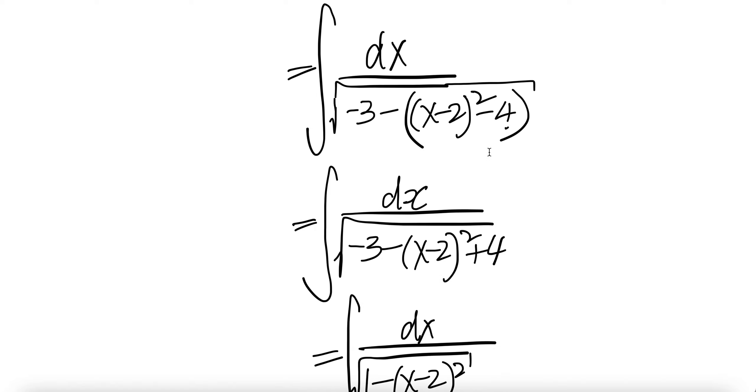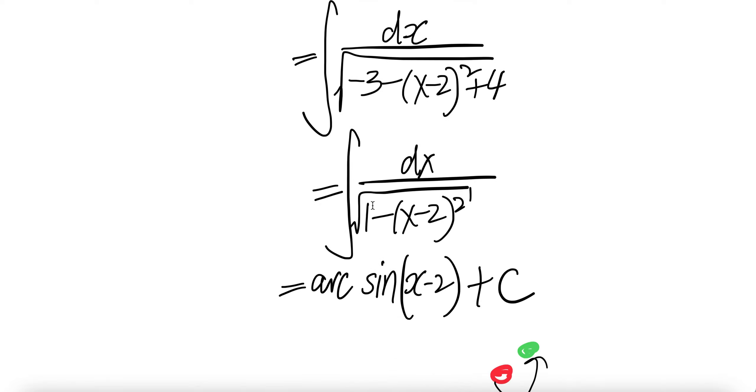Minus 3, distribute that, you get minus x minus 2 squared. Minus minus is plus 4. 4 and minus 3 is 1 minus x minus 2 whole squared.